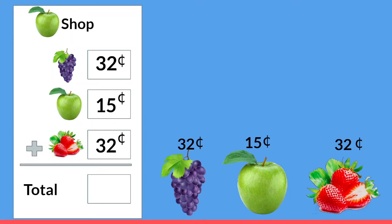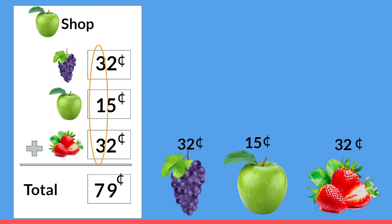When we add these three two-digit numbers together we start by adding all of the ones place together. Two plus five is seven, plus two more is nine. And now we're going to look at the tens place. Three plus one is four, plus three more is — did you say seven? Well done! Thirty-two cents plus fifteen cents plus thirty-two cents is seventy-nine cents.